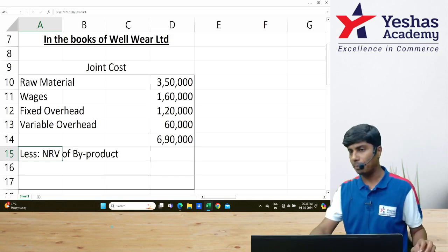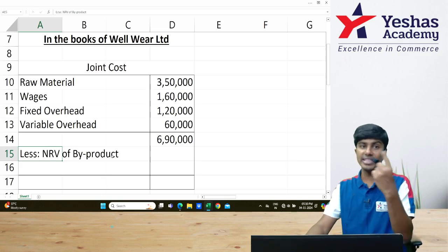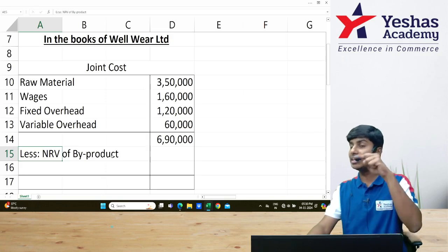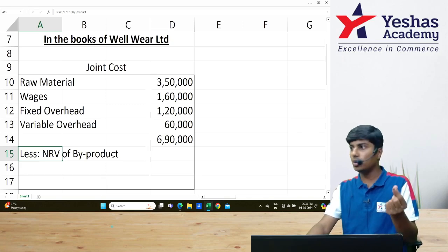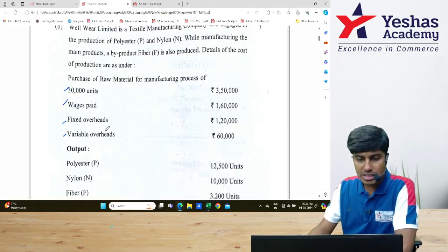From this, let us deduct NRV of byproduct that is fiber. NRV of byproduct is not given. They have given sale value and also given us the net realizable value computation. We will take the sale value and deduct the selling expenses to determine NRV.